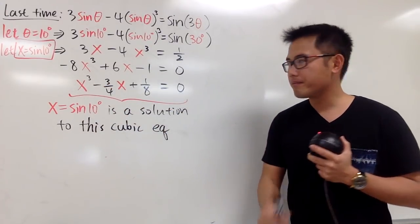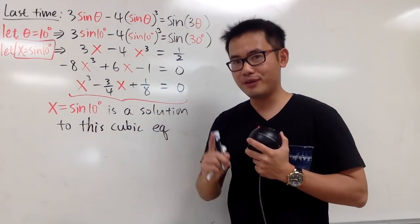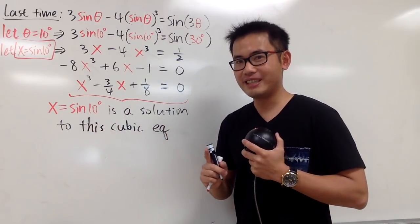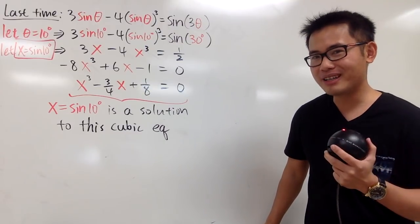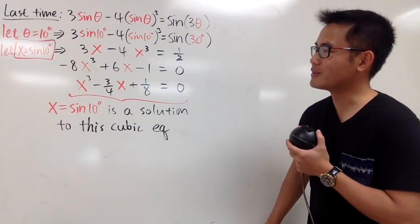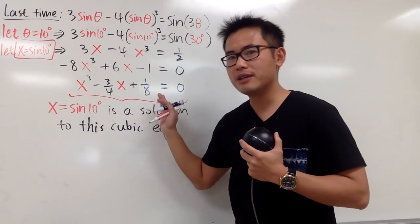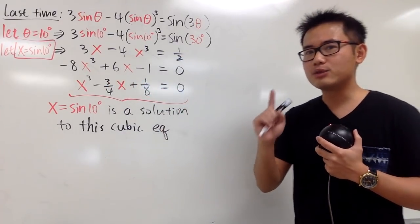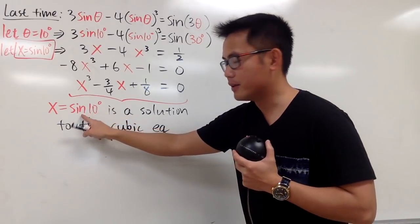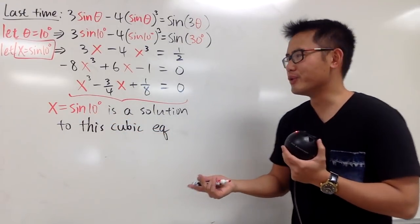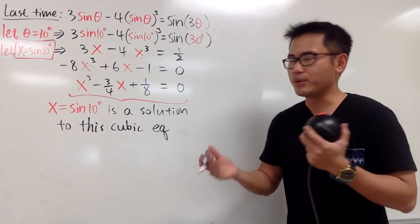However, this is a cubic equation, so sine of 10 degrees is only one of the solutions. Where are the other two? That's the interesting part — let's try to figure it out. We know all cubic equations have at least one real answer. This one is definitely real, but for the other two, we don't know yet if they will be complex or still real.